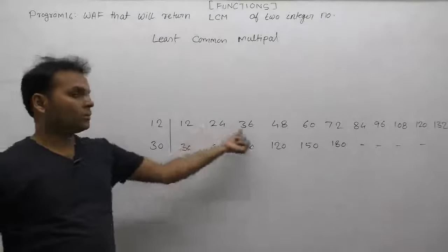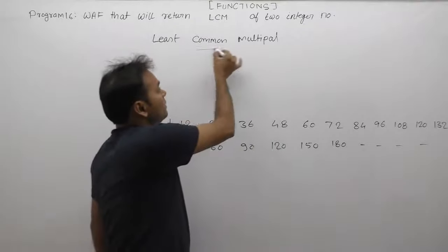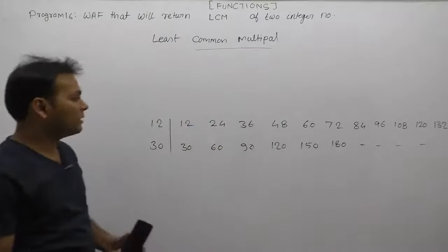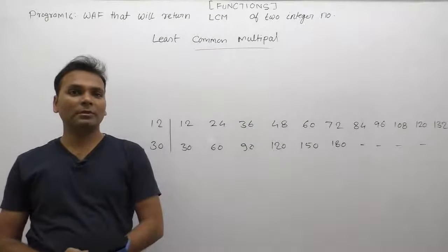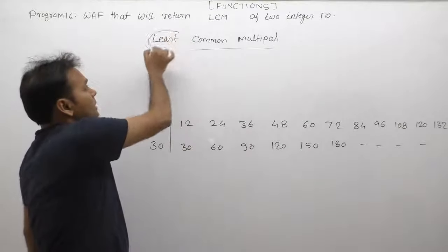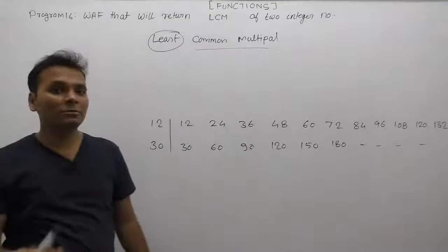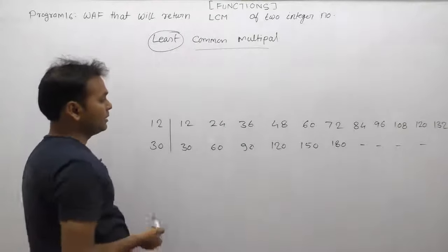Now I need to find the common multiples between them. The common multiples form an infinite series. We need to find the least one, not the maximum. Least means smallest.